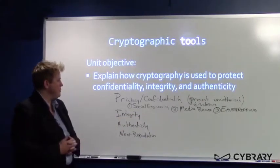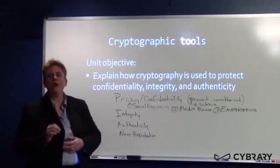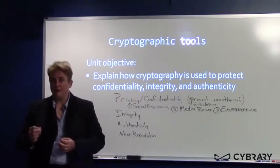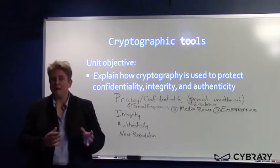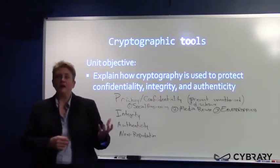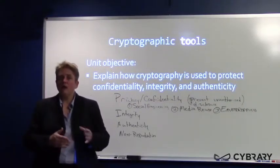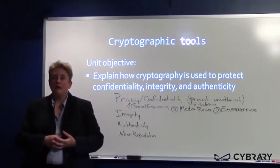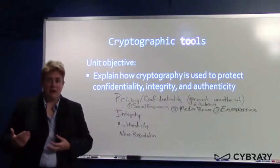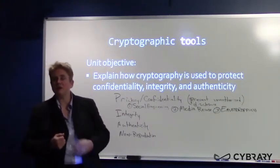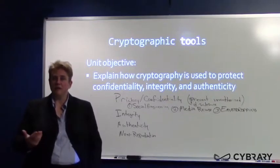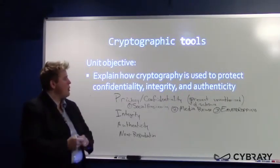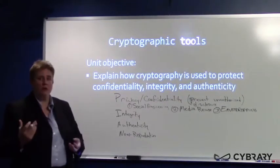Let's talk about integrity. When we talk about integrity, what we want to be able to do is detect modification. Modification can happen in several different ways — it can be unintentional or accidental, meaning a file is corrupted across a link, or integrity can be maliciously modified, where an attacker intercepts communication, modifies it, and retransmits. So we have different ways that we deal with intentional versus unintentional modification.